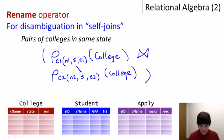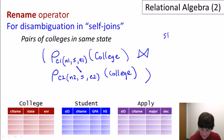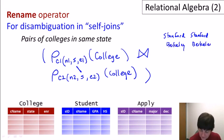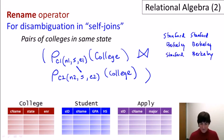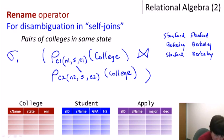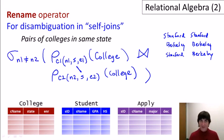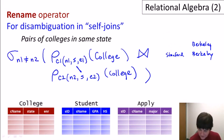One problem with this query is that we'll get colleges paired with themselves — Stanford, Stanford and Berkeley, Berkeley — which is presumably not what we want. We can add a selection condition that name one is not equal to name two. That takes care of self-pairings, so we no longer get Stanford, Stanford or Berkeley, Berkeley.